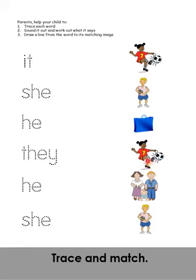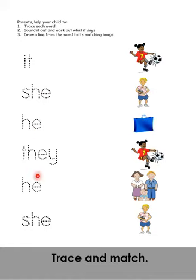In this exercise, trace and match. 'It' is usually used for things. Then you match it to the thing. 'She' is for a girl. 'He' is for a boy. 'They' is for mereka — more than one person. 'He' is also for a male, and 'she' is also for a female.